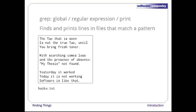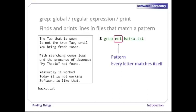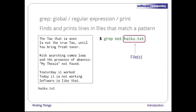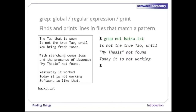Here's the file we'll use for our examples — it contains three computer haikus taken from a competition that Salon Magazine ran in 1998. Let's run the command 'grep not haiku.txt'. Here, 'not' is the pattern we're searching for. Every alphanumeric character matches against itself. The output is the three lines in the file that contain the letters N-O-T.